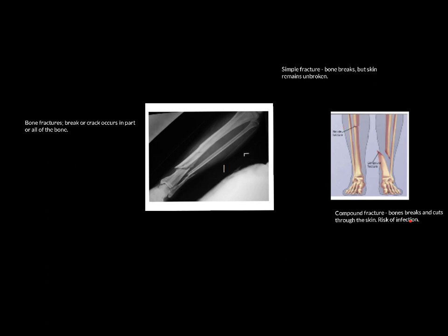A compound fracture, also known as an open fracture, is where the bone breaks and comes through the skin. Again, this is an injury to the tibia, but this time the bone has come through the skin, and the big extra risk here is the risk of infection.